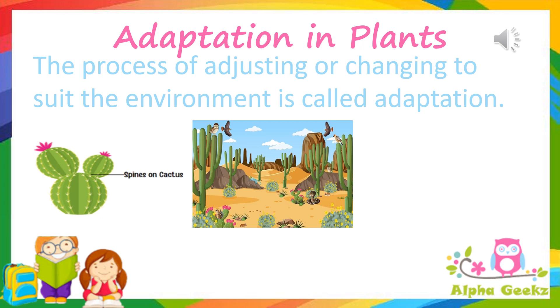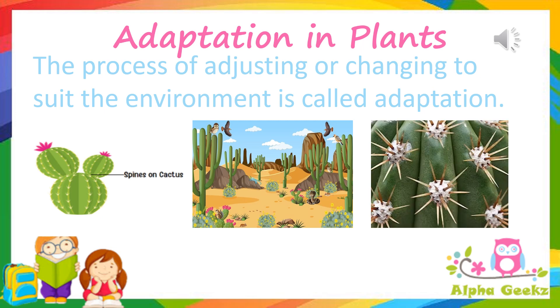For example, a special feature in desert plants is that the leaves convert themselves into spines to save whatever water is available, and hence they have adjusted well to low water conditions.